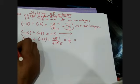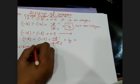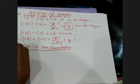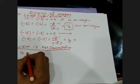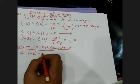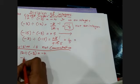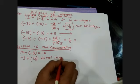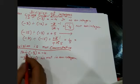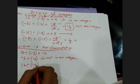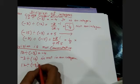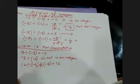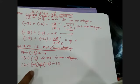The second property is: division is not commutative. That means 12 divided by minus 3 equals minus 4, but minus 3 divided by 12 equals minus 1 over 4. Both are not equal. So division is not commutative.